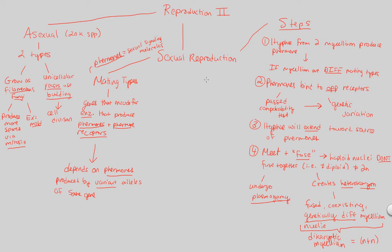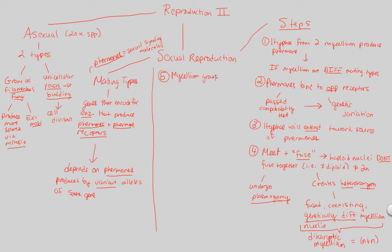We're going to continue the final steps over here. There are about two or three more steps to make sure we understand. We're now on step five. We'll make a line here to separate from this, and we'll do step five. In step five, the mycelium will grow via mitosis.